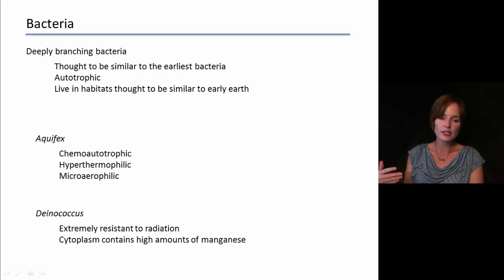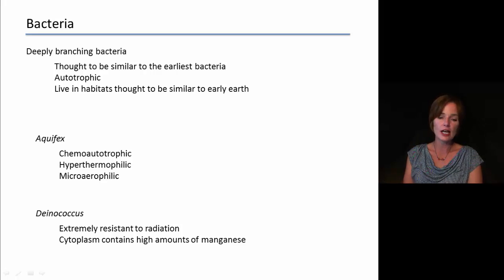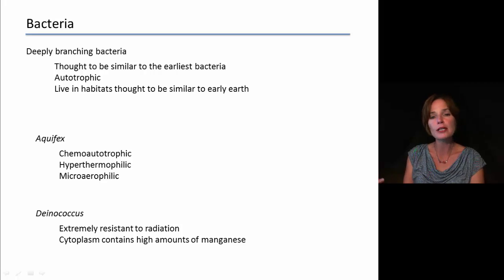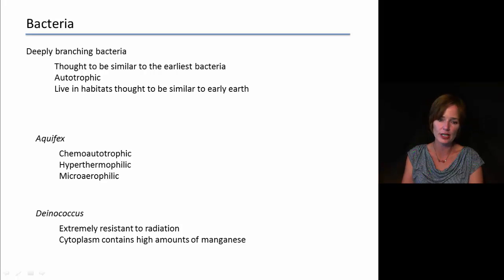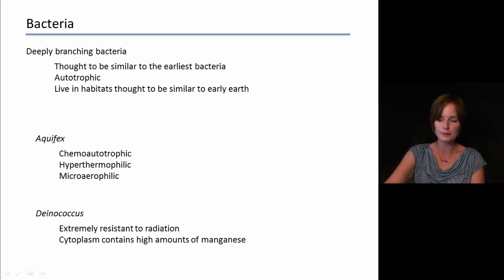Another group in the deeply branching bacteria is Deinococcus. These are extremely resistant to radiation. Their cytoplasm contains high amounts of manganese, which probably helps them survive that high radiation by helping them repair damage caused by radiation.